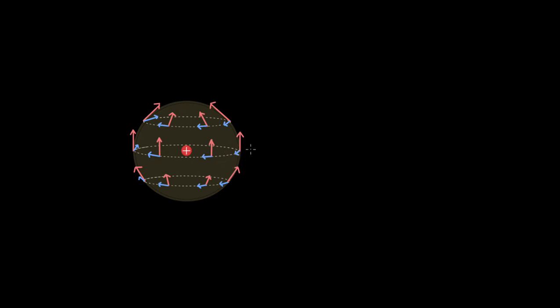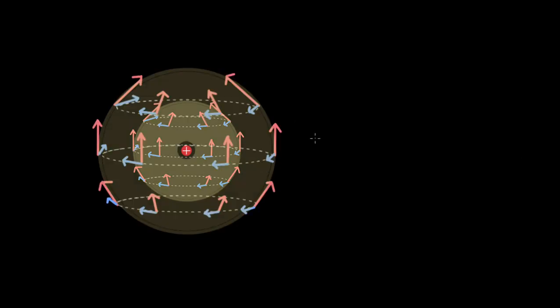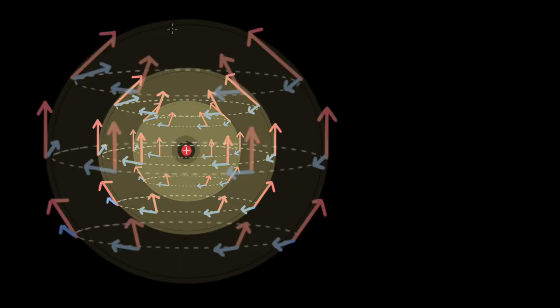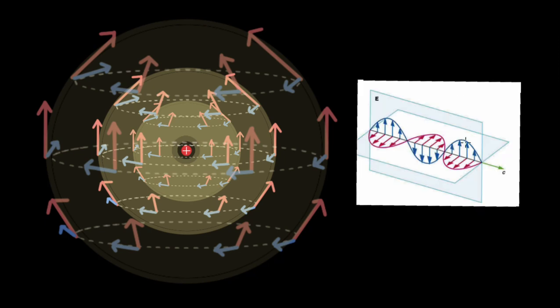Here we have the charge being accelerated in the downward direction only — not sinusoidally. We see the electric and magnetic field lines propagating in all directions at the speed of light. After some time these field lines reach further positions as they propagate outward. Notice there is no electromagnetic radiation vertically — we can connect this to what we saw earlier because no kink is formed along the axis of movement, so there is no electromagnetic radiation in that direction.